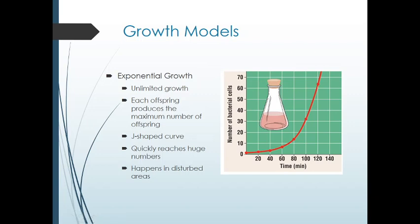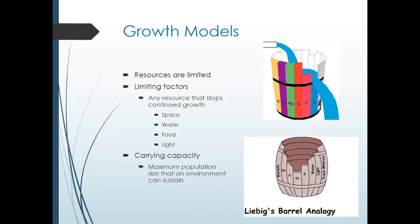But what we know is that this cannot happen forever — a population cannot grow exponentially. Eventually resources become limiting. We've seen this Liebig's barrel analogy, where the population size is like the water level in a barrel. The height of the water level is how many individuals you can have. In one barrel, potassium is limiting; in another habitat, nitrogen might be limiting. If you were to add nitrogen fertilizer, you can fill the barrel up more and have more individuals. This limiting factor can be pretty much anything — space, water, food, light, nutrients — it could be almost anything.